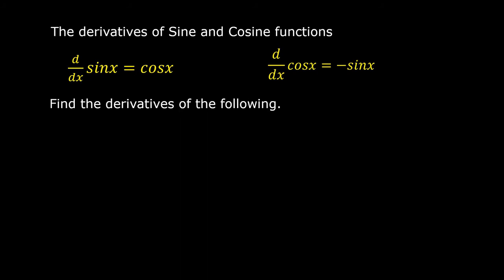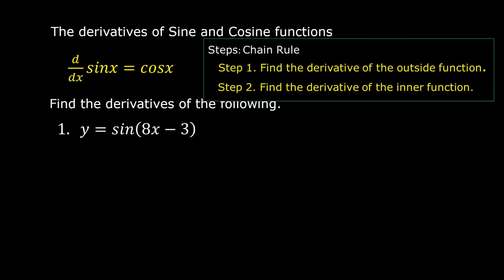Let us find the derivatives of the following. Number 1: y is equal to sine of 8x minus 3. We are going to use the chain rule. Step number 1: find the derivative of the outside function. Step number 2: find the derivative of the inner function. The derivative of sine of 8x minus 3 is equal to cosine of 8x minus 3.